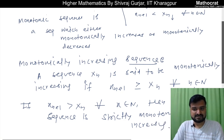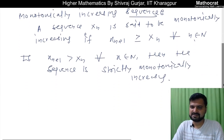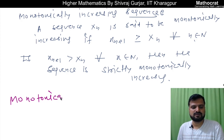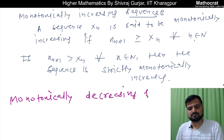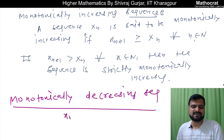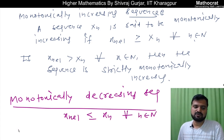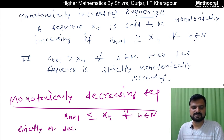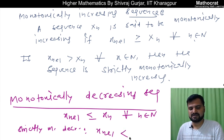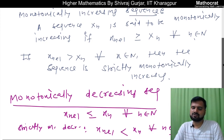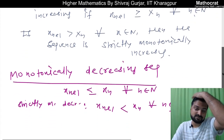Similarly, we can define a monotonically decreasing sequence. For a monotonically decreasing sequence, xn+1 is always less than or equal to xn for each n belonging to N. For a strictly monotonically decreasing sequence, xn+1 is strictly less than xn for each n belonging to N. If either of these conditions is satisfied, then we say that the sequence is monotonic.